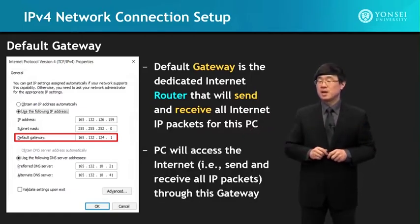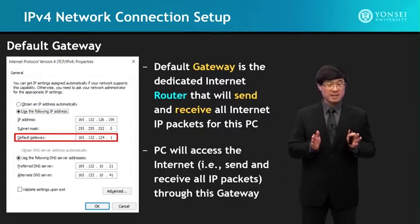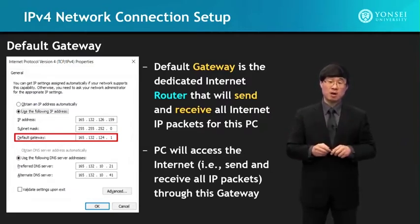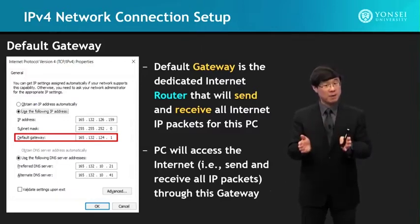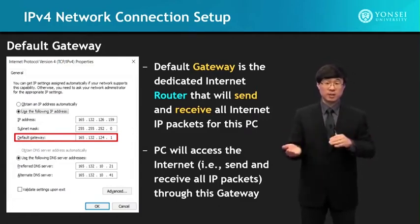The PC will access the Internet through this gateway. All packets sent and received at this PC go through that gateway — that is why it's called the default gateway. By definition, all gateways are IP routers, so that's why you'll see me use the words router and gateway interchangeably.